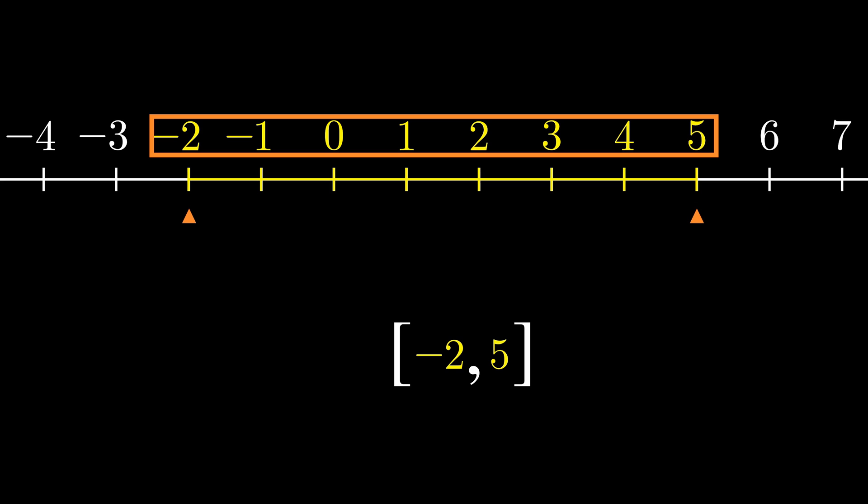There's also what is called an open interval, which is essentially the opposite. That is, the set of numbers does not include negative 2 and 5. We can represent this by enclosing the two numbers in parentheses instead of square brackets. But for this explanation, let's just focus on closed intervals.